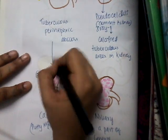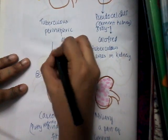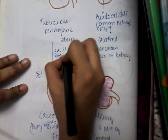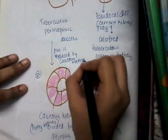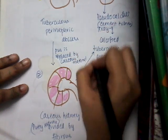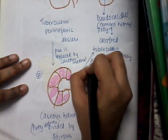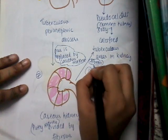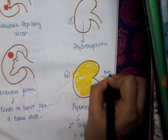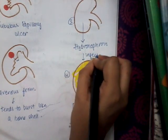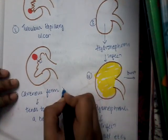The caseous material progressively replaces the kidney, which is called the putty kidney. When this becomes calcified, it is called the cement kidney, and the calcified areas seen are the pseudocaliculi. The pus can also be replaced by caseous material, leading to caseous kidney formation. Once the caseous kidney forms, there is fibrosis and calcification, leading to the cement kidney or pseudocaliculi. Finally, there can be miliary involvement. These are the stages and different types of renal tuberculosis.